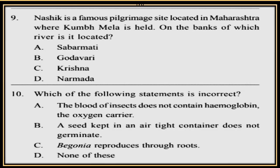Question 9. Nashik is a famous pilgrimage site located in Maharashtra where Kumbh Mela is held. On the banks of which river is it located? A. Sabarmati, B. Godavari, C. Krishna, D. Narmada.